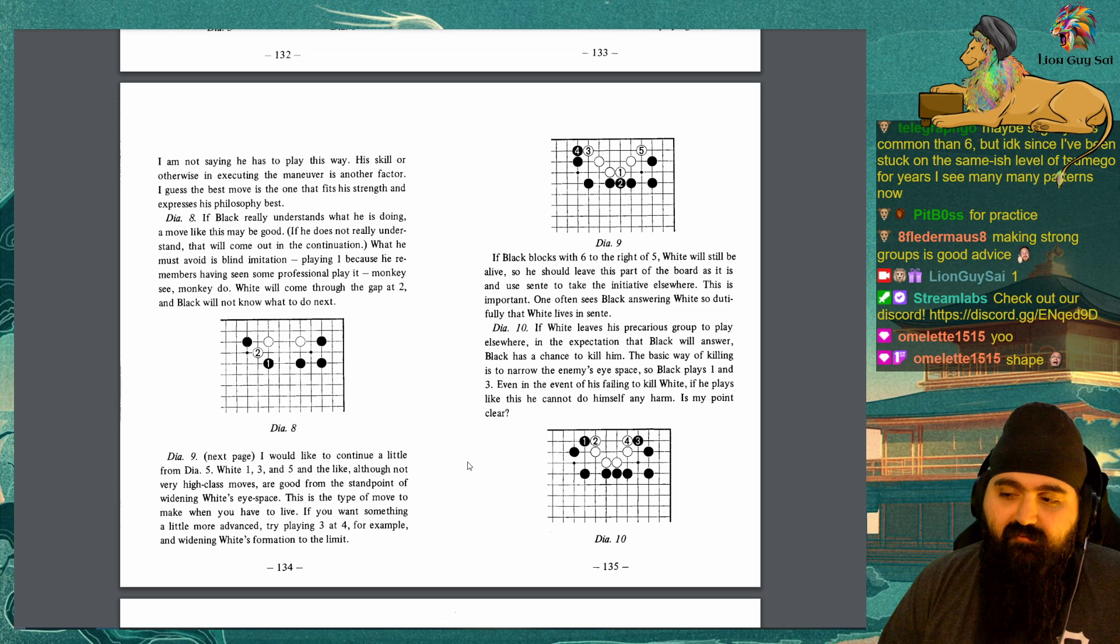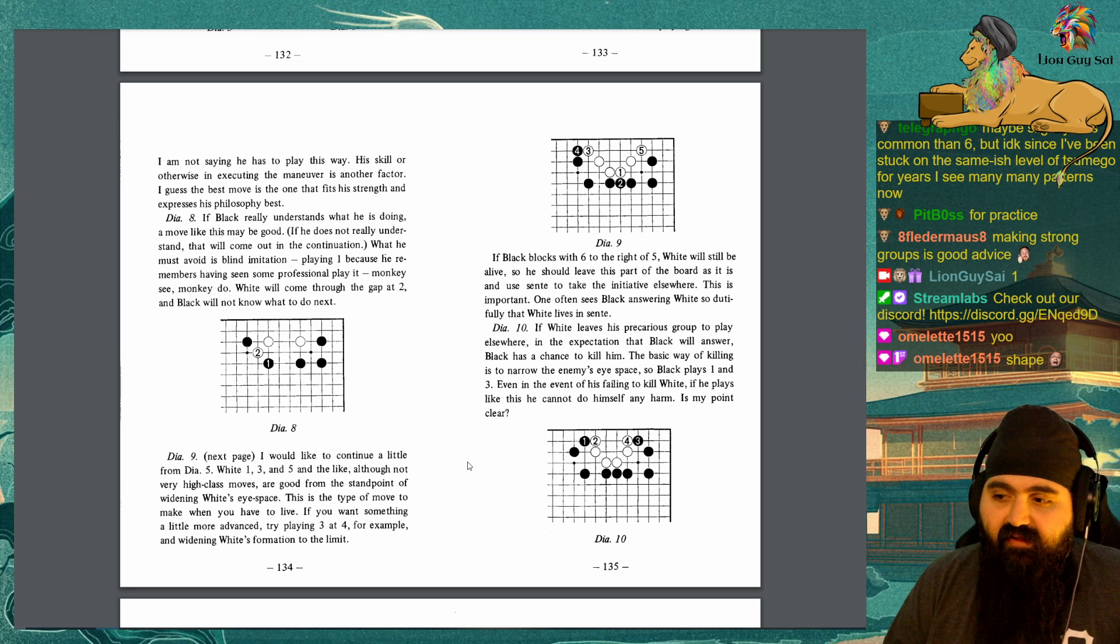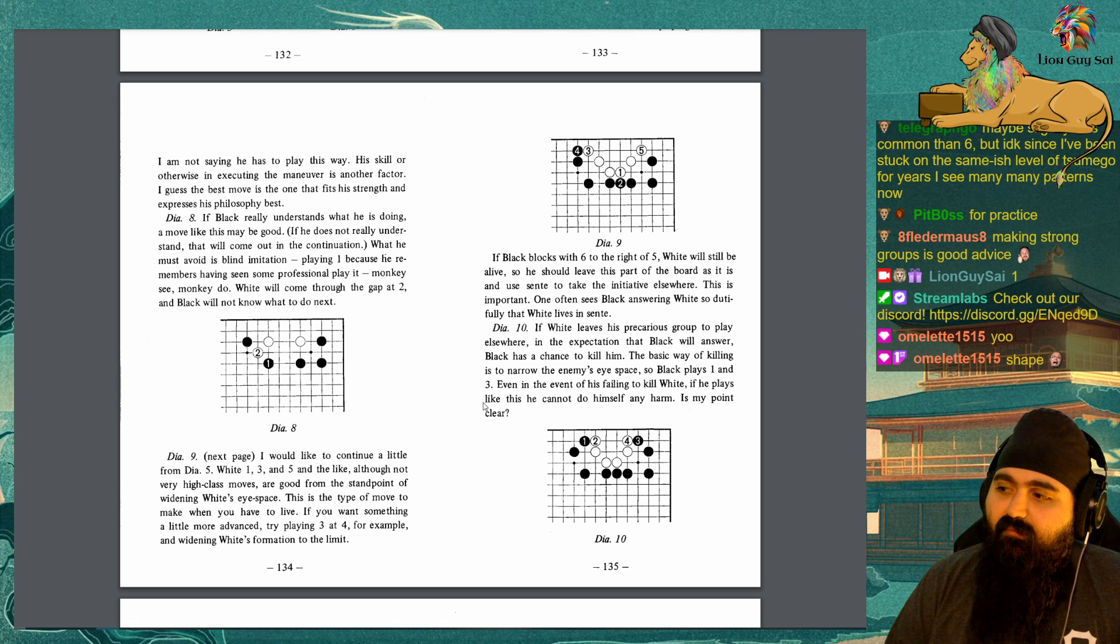Diagram 9: I would like to continue a little from Diagram 5. White 1, 3, and 5, and the like, Black, although not very high class moves, are good from the standpoint of widening White's eye space. This is the type of move to make when you have to live. If you want something a little more advanced, try playing 3 at 4, for example, and widening White's formation to the limit. If Black blocks 6 with 6 to the right of 5, White will still be alive, so he should leave this part of the board as it is and use sente to take the initiative elsewhere. This is important. One often sees Black answering White so dutifully that White lives in sente.